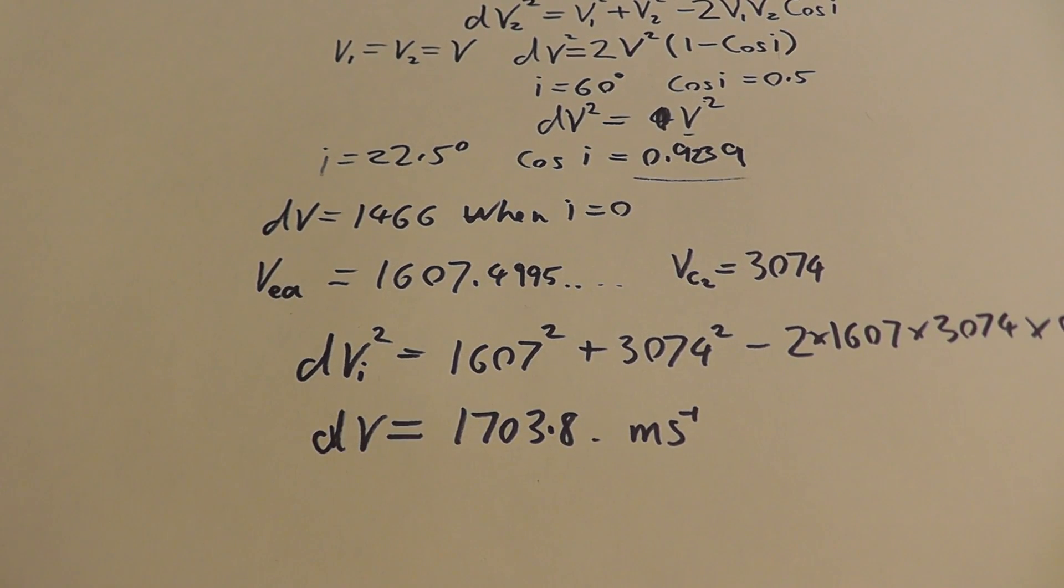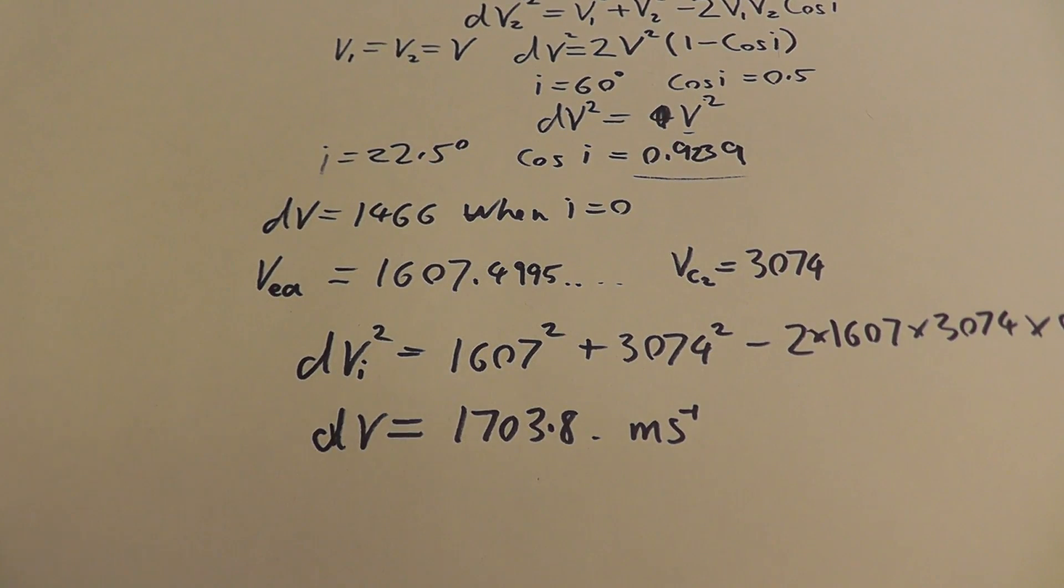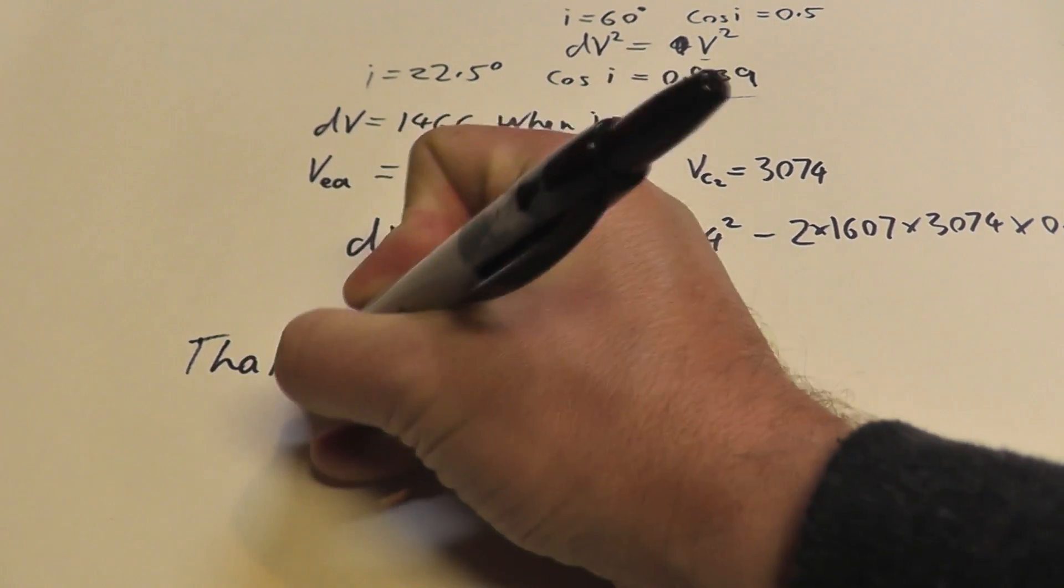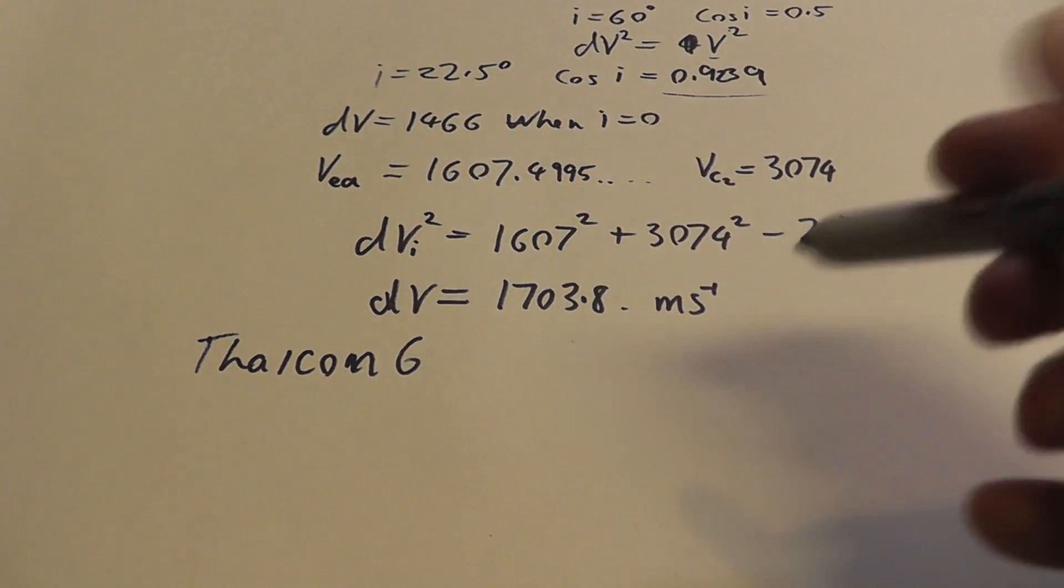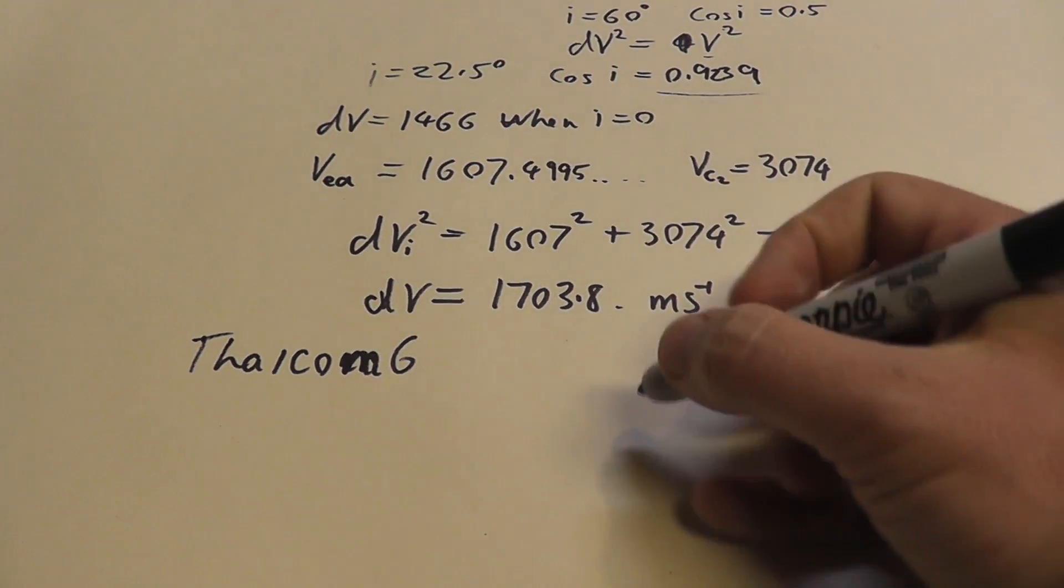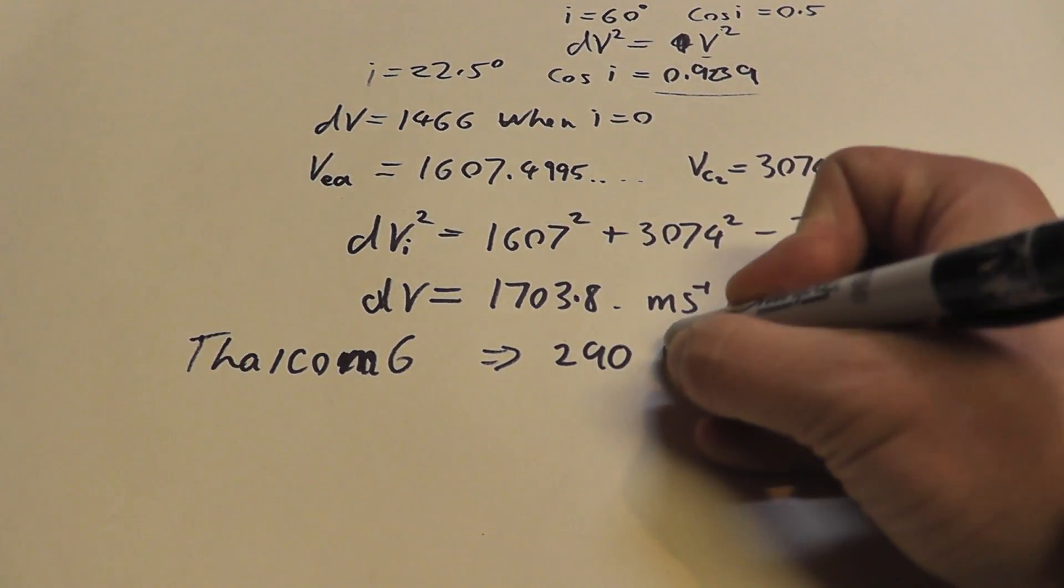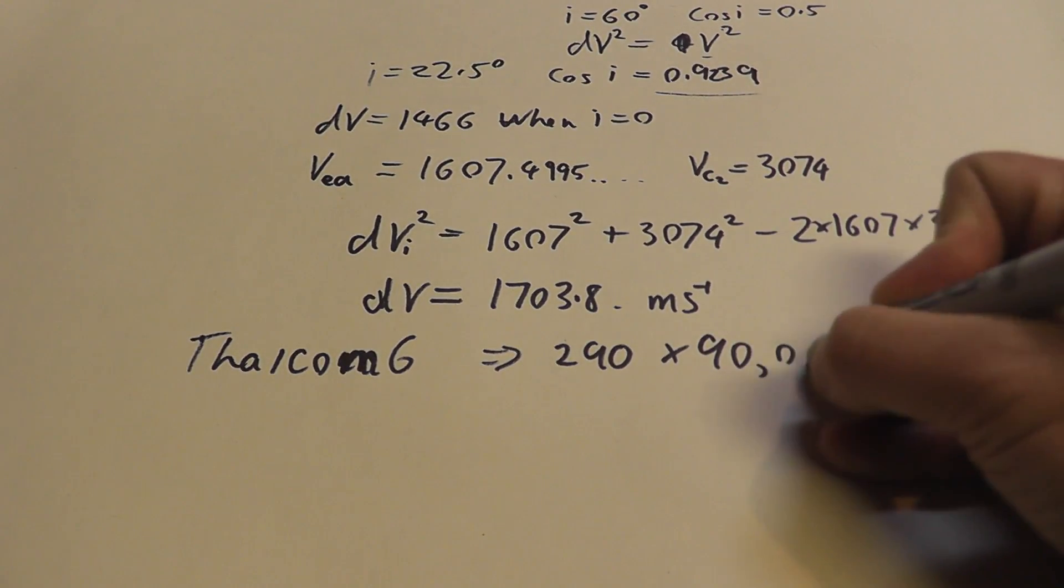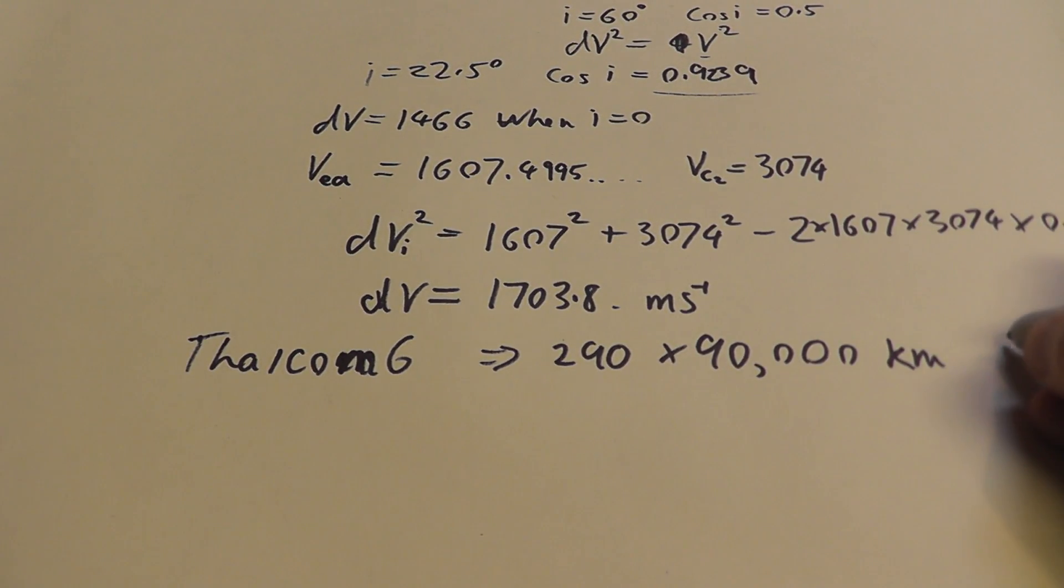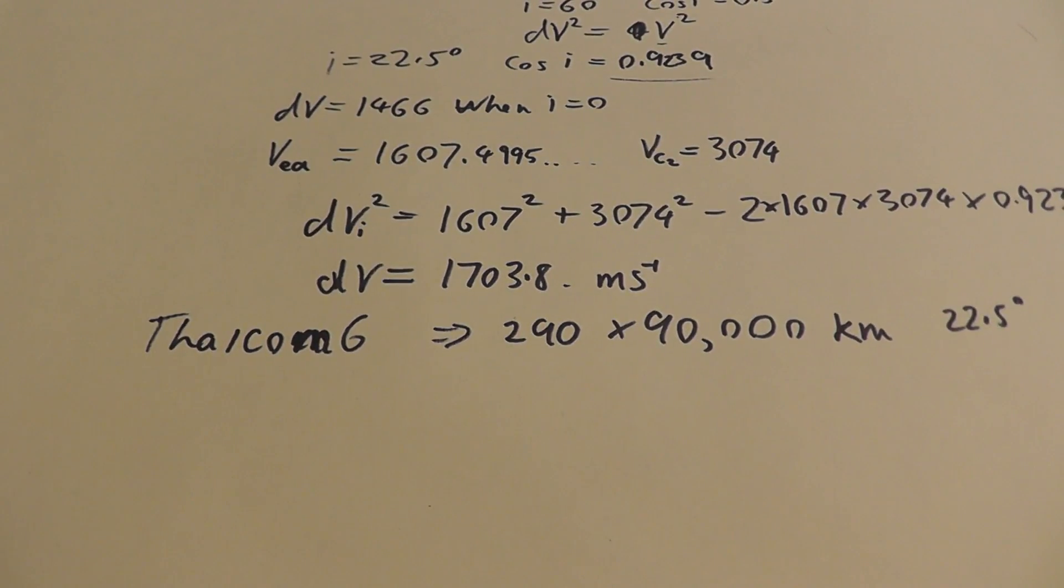This leads me to one other part, where I was asked about the THAICON satellite that was launched by SpaceX. THAICON6's transfer route was actually completely different. It was not what we did here. We never went straight to geostationary orbit. It actually went into a 290 by 90,000 kilometer orbit at 22.5 degrees inclination. So, people ask me, why do you do that? Why would you go way up above the geostationary orbit?